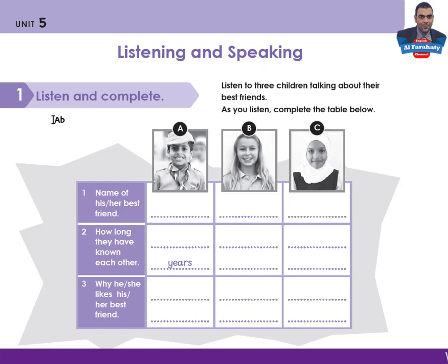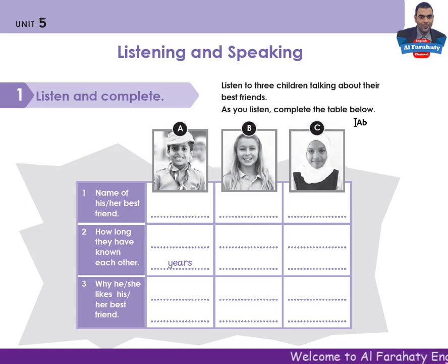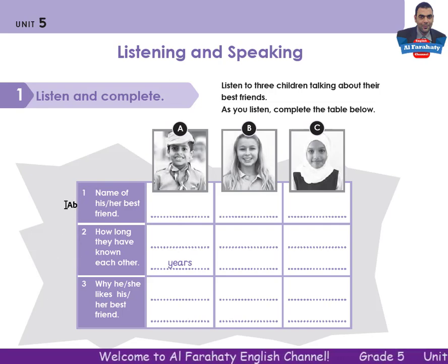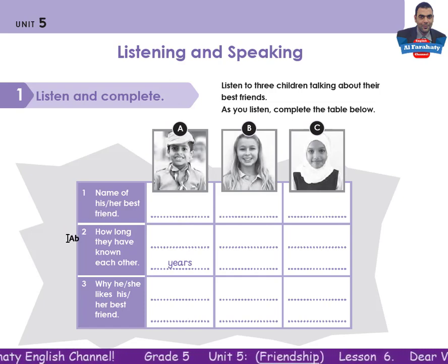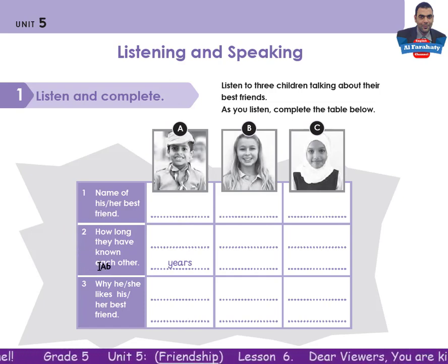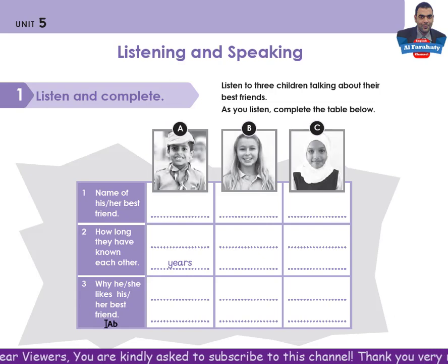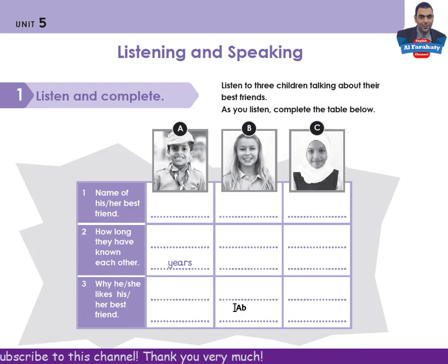Activity 1: Listen and complete. Listen to three children talking about their best friends. As you listen, complete the table below. You are asked to write three things about each one: the name of his or her best friend, how long they have known each other, and why he or she likes his or her best friend. Now you will listen, and as you listen, complete this table, then come back to check your answers.